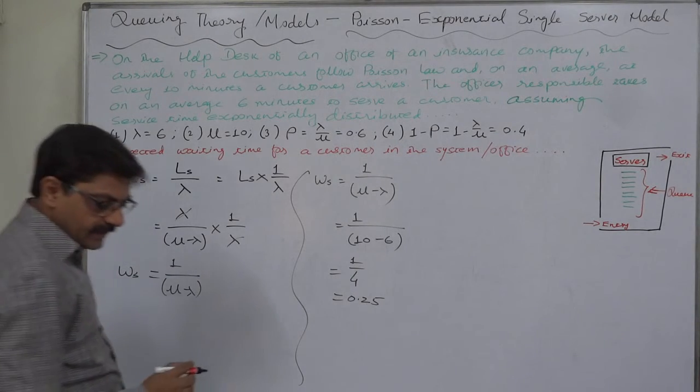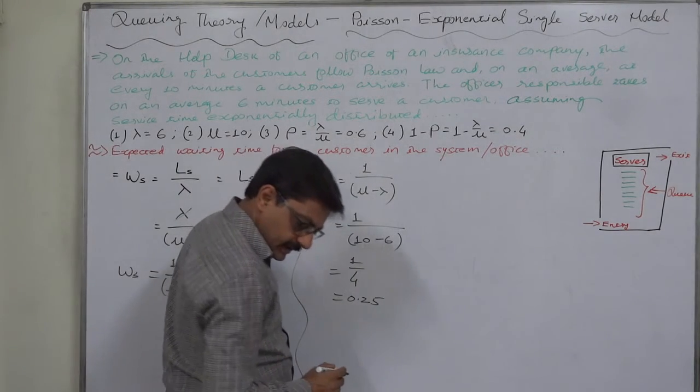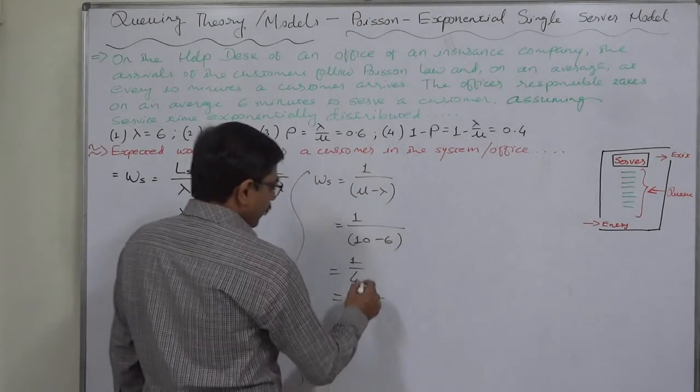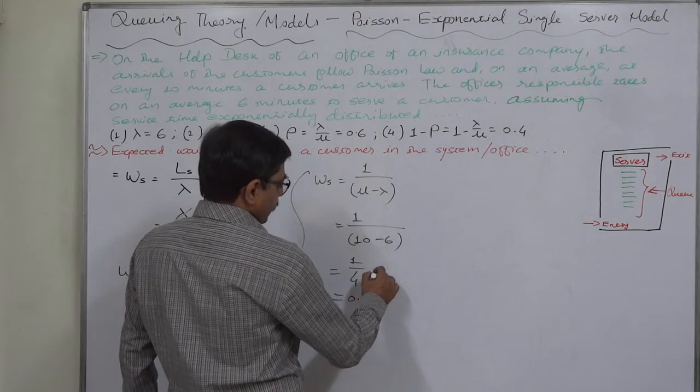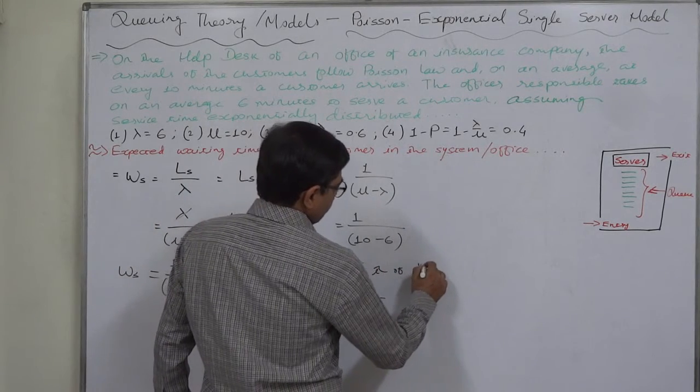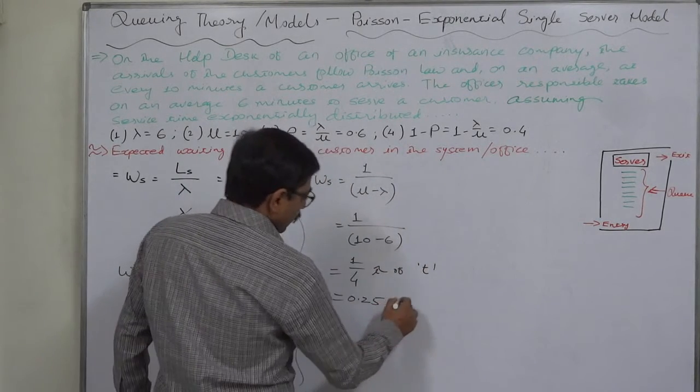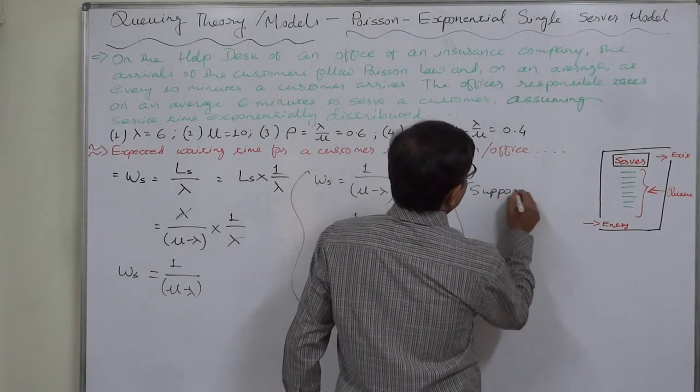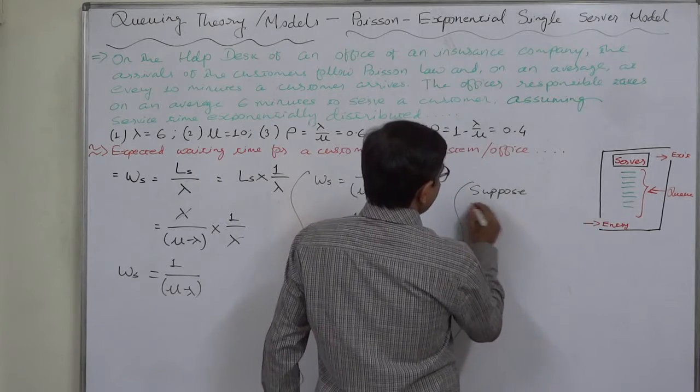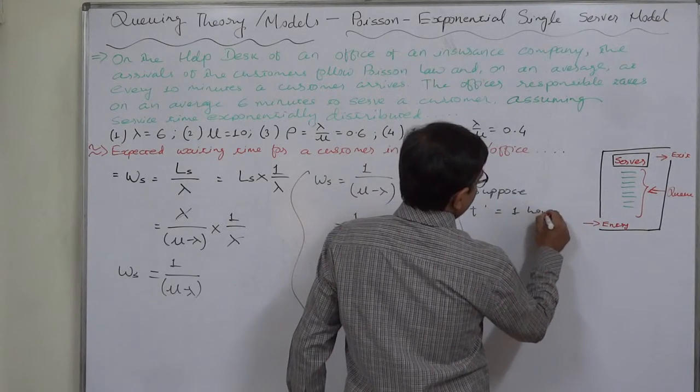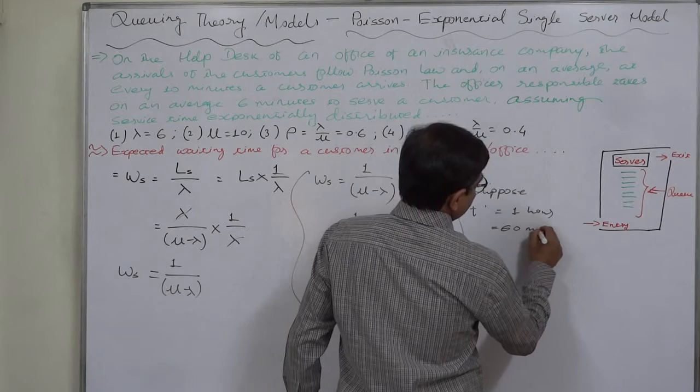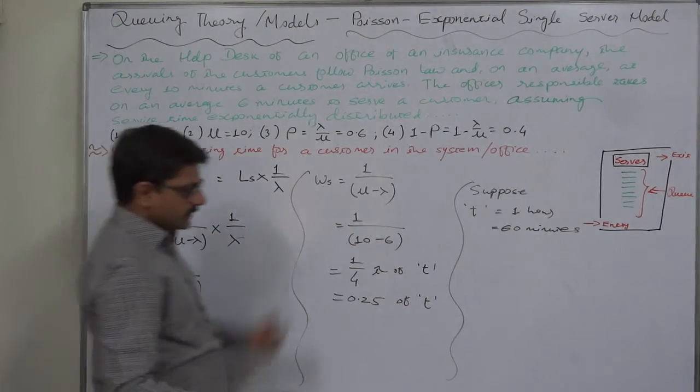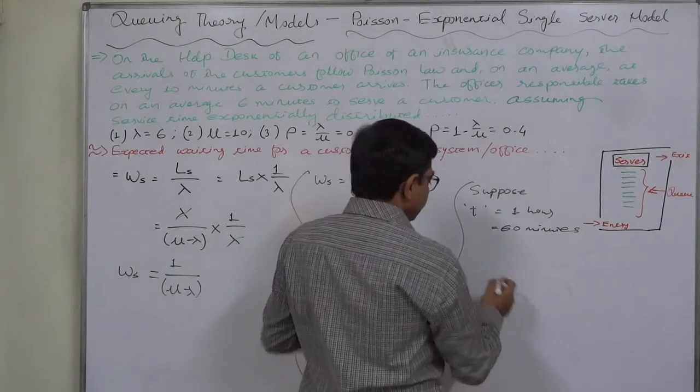Whatever the unit of time is taken, in this case it will be 1 fourth of T or 0.25 of T. Suppose T is equal to 1 hour, that is 60 minutes. Suppose the time unit under consideration or under study is 1 hour, 60 minutes.